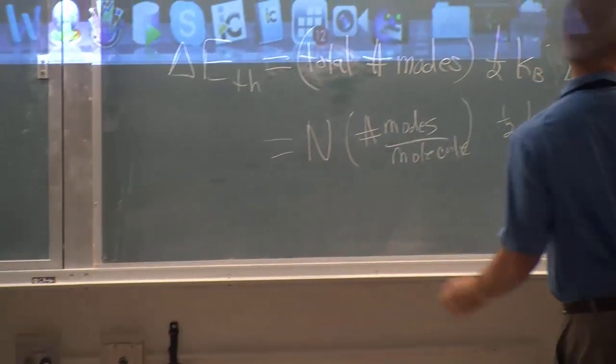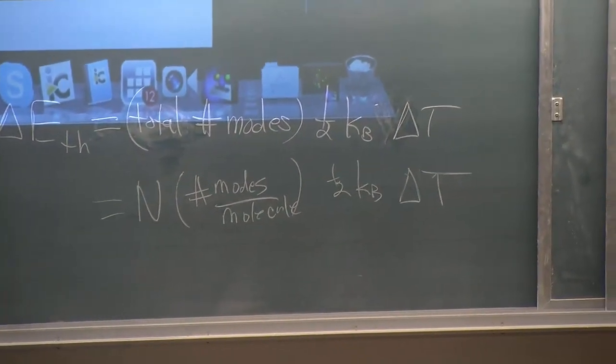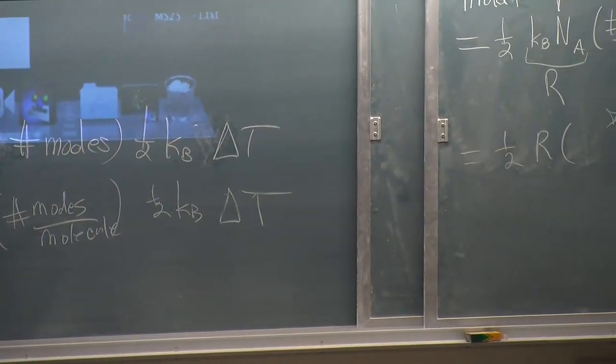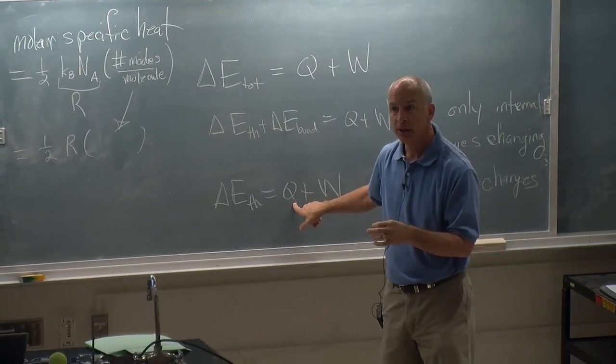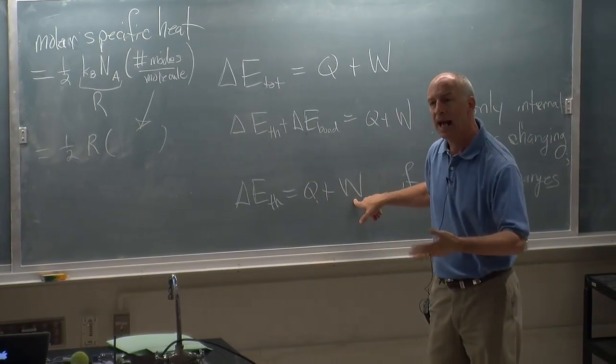So how is work negative? Let me just leave it at this. Delta E thermal is equal to the heat added, Q, plus the work added, W.